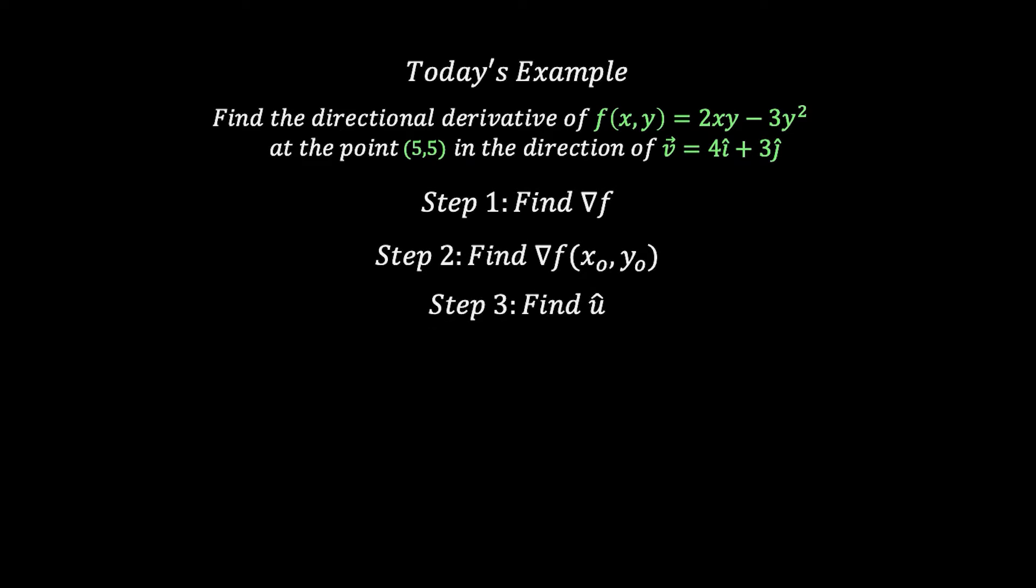The third step is to find our unit vector u, and the fourth step is to find our directional derivative. We're basically going to dot product the results from steps 2 and 3 together, and this will give us our directional derivative.